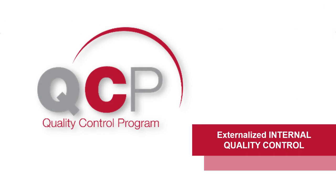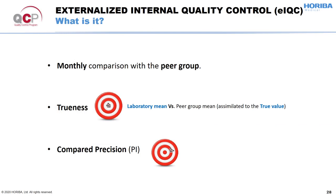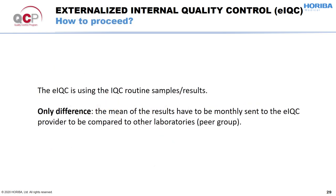Then we have the externalized IQC. This quality control will allow to monthly assess the trueness and precision by comparing the results to the peer group. The externalized IQC will not require additional control samples, as the laboratory can use its daily internal controls. It will just have to send the results to the externalized IQC provider to obtain its peer group comparison.